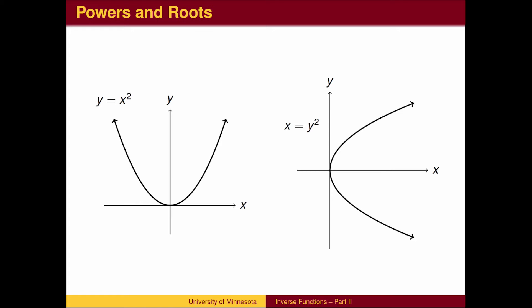Certain functions are not one-to-one, so we must restrict the domain to a portion of the graph that is one-to-one to find an inverse. For example, the function y equals x squared is not one-to-one. Each y value corresponds to two x values, one positive, one negative.